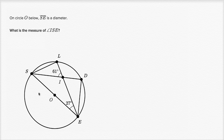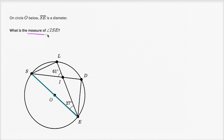On circle O below, segment SE is a diameter. So SE is a diameter, that's what they're telling us. And they say, what is the measure of angle ISE? So we're trying to figure out this angle right over there.